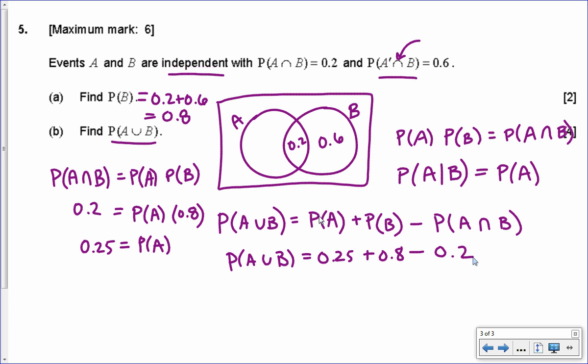And so this ends up being, let's see, 0.25 for A plus 0.8 for B would give us over 1, would be 1.05, but then we're subtracting out the 0.2. Oh yeah, so it's 0.85, that's correct. All right, and that is the probability of the union of A and B for this question, and that's all.